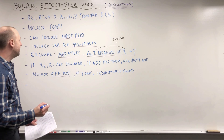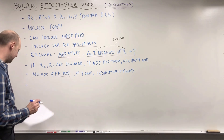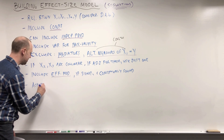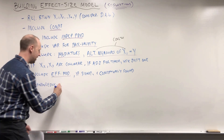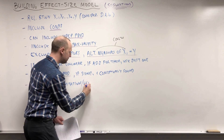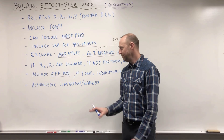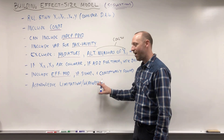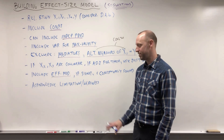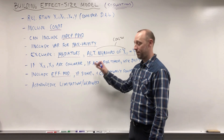One thing that I think is always important is to acknowledge the limitations or weaknesses of your model. Every dataset and every model you build has some limitations, no matter how good the data collection was or how carefully the model was built. Just acknowledge that they're there — the model is never going to be perfect, and we're trying to get as good as we can.